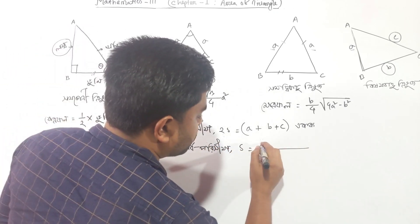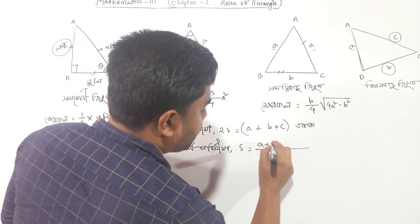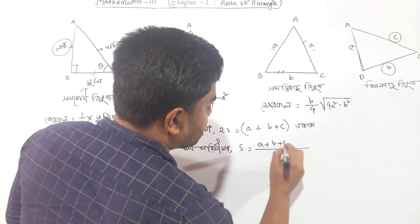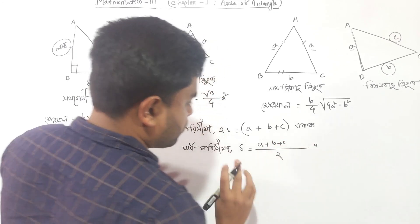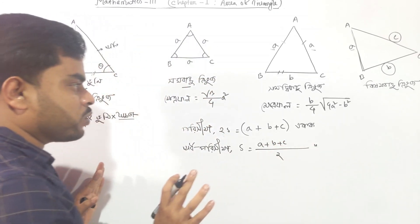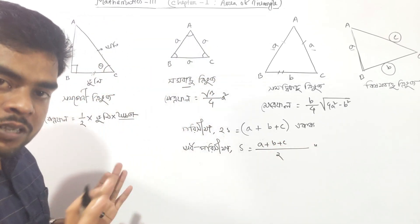S is equal to A plus B plus C, divided by 2. That is the formula. Complete.